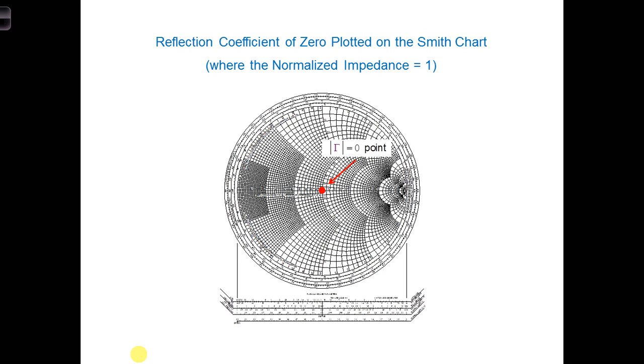Now I said we can obtain the reflection coefficient from the Smith chart. We know that when the load is matched to the transmission line, there is no reflection and the reflection coefficient is 0. This means that an impedance dot at the center of the Smith chart must represent a reflection coefficient of 0.